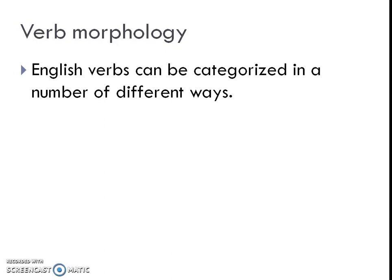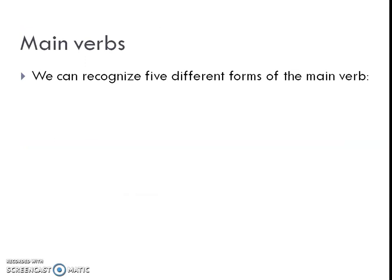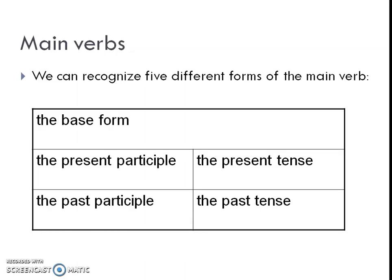Let's study verb morphology first. English verbs can be categorized in a number of different ways. On the basis of their function in the verb phrase, we can distinguish between main verbs and auxiliaries. Auxiliary verbs are also called helping verbs. We can recognize five different forms of the main verb: the base form, the present participle, the present tense, the past participle, and the past tense — like go, goes, going, went, gone.